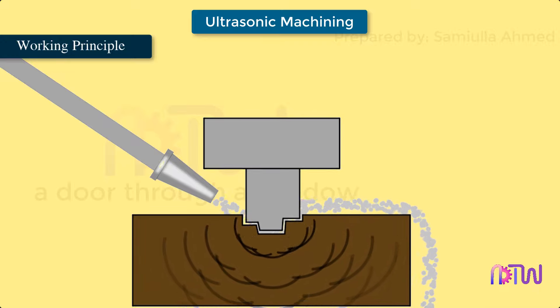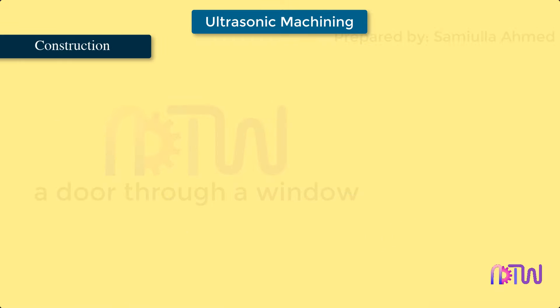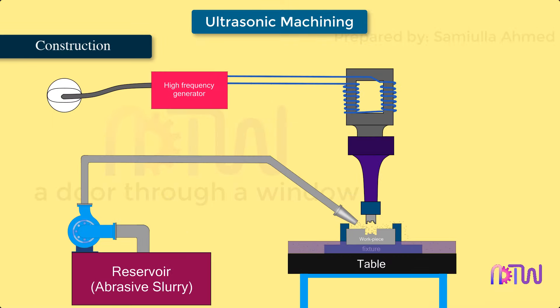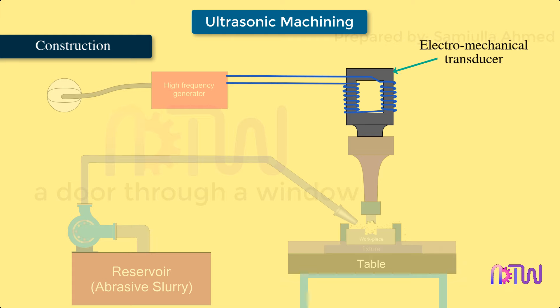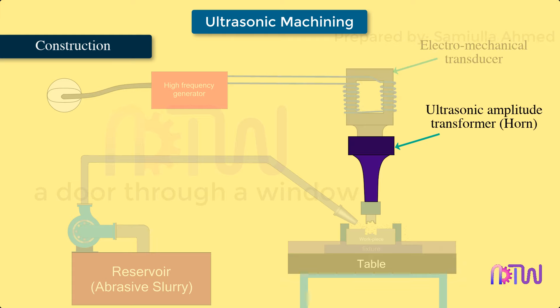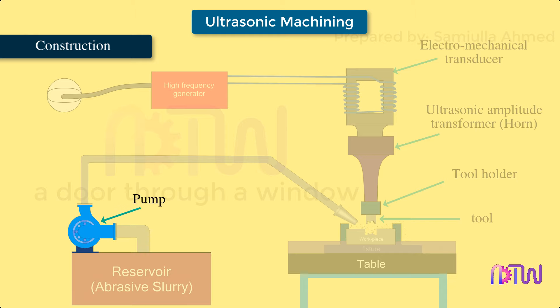Construction: An ultrasonic machine consists of the following parts: power supply, high frequency generator, electromechanical transducer, ultrasonic amplitude transformer which is also called a horn, tool holder, tool, abrasive slurry, pump, and nozzle.